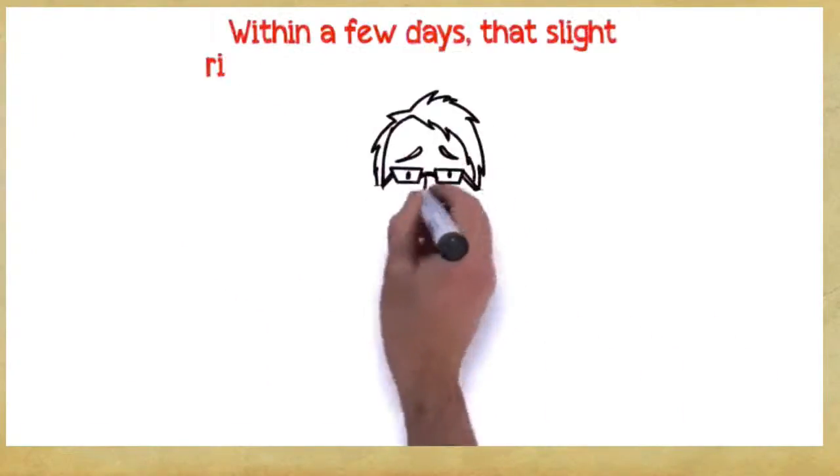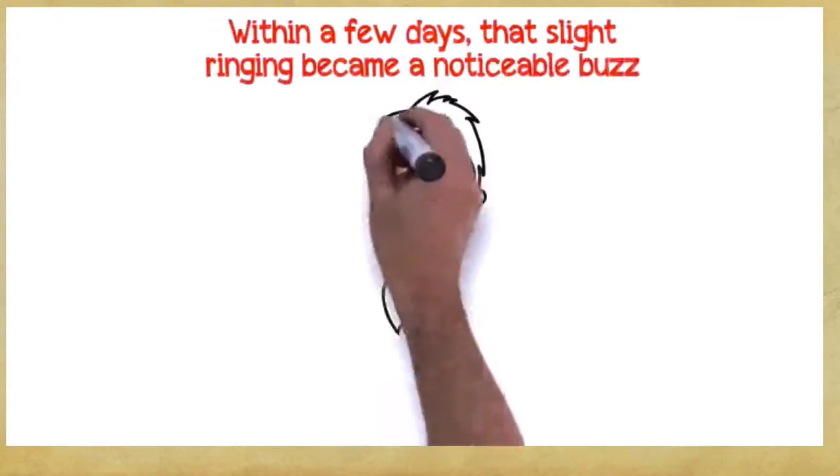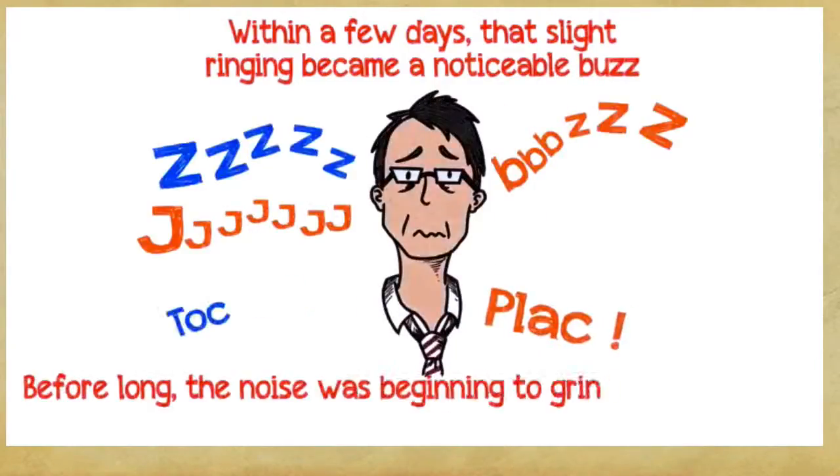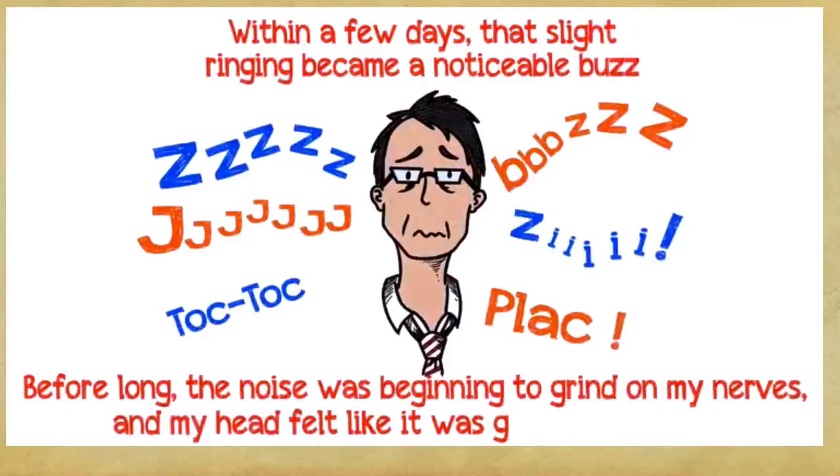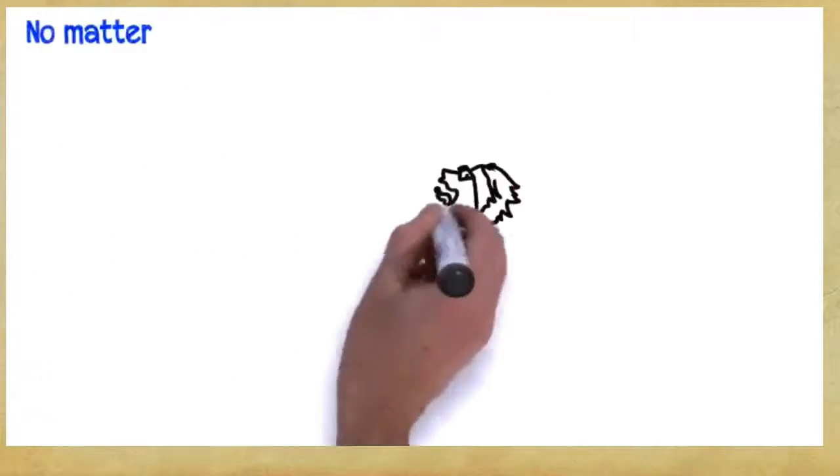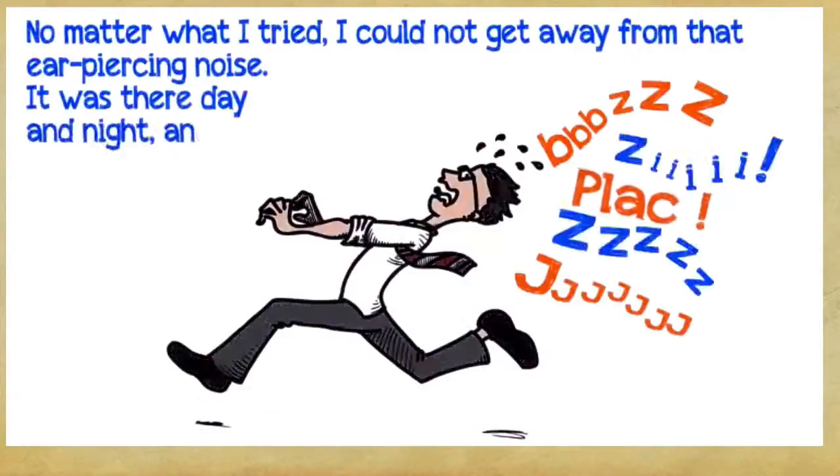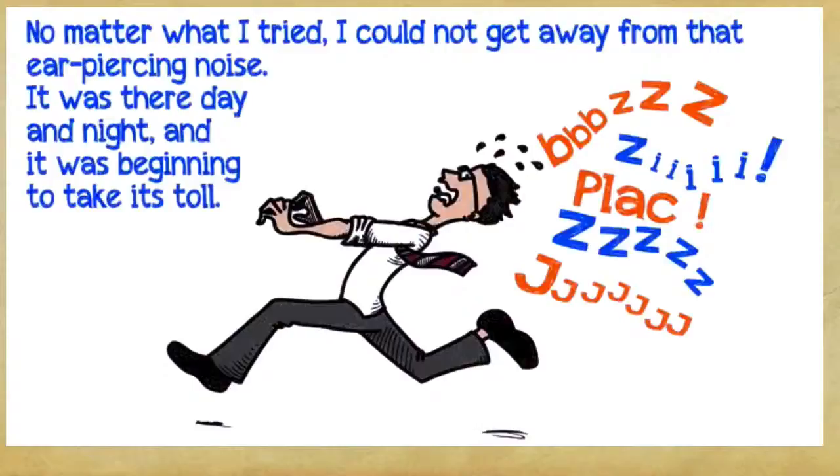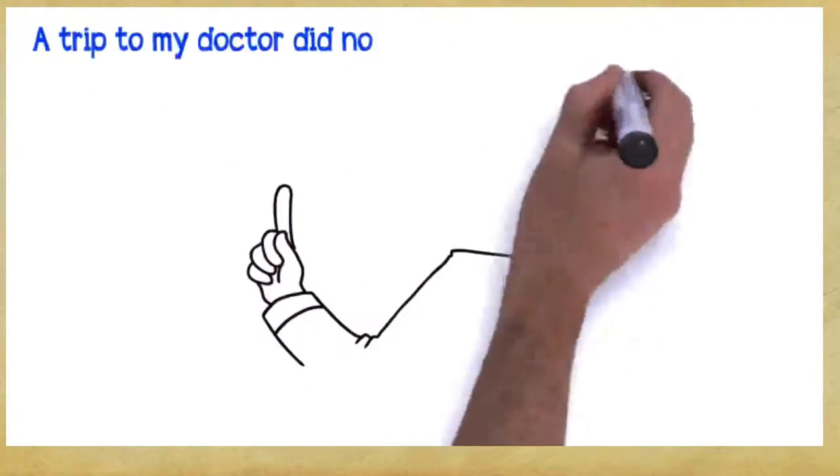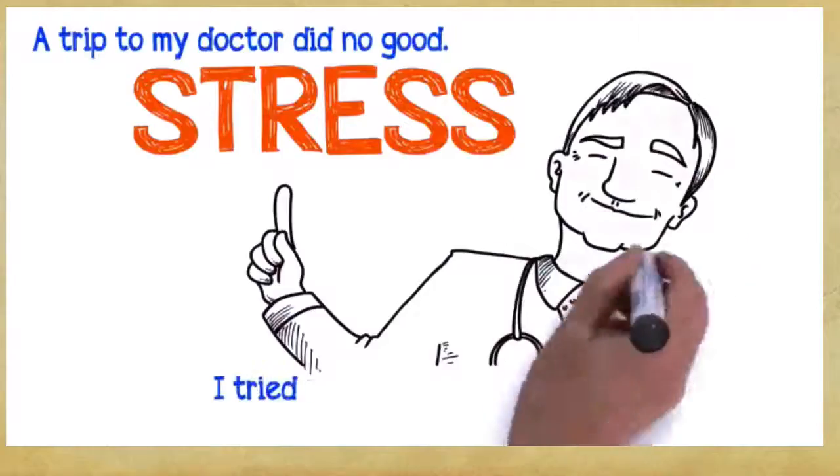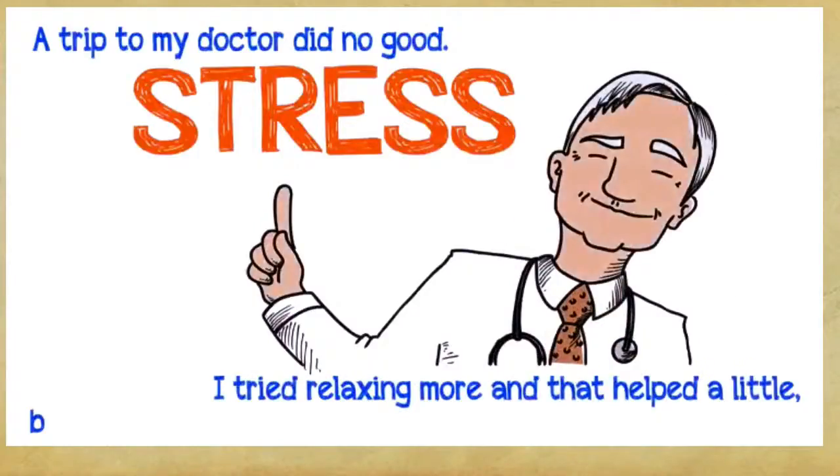Within a few days, that slight ringing became a noticeable buzz, followed periodically by loud bangs. Before long, the noise was beginning to grind on my nerves, and my head felt like it was going to explode. No matter what I tried, I could not get away from that ear-piercing noise. It was there day and night, and it was beginning to take its toll. A trip to my doctor did no good. He thought it was just a migraine induced by stress. I tried relaxing more, and that helped a little, but I still couldn't get rid of that constant buzz in my ears.